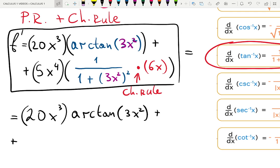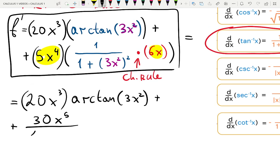Now we have a fraction. Numerator will collect the terms 6x and 5x to the 4. It's going to be 30x to the 4 times x gives you x to the 5. Remember, we add powers in this case. And we divide by 1 plus 9x to the 4, because we're squaring the input 3x squared.